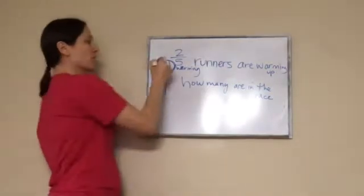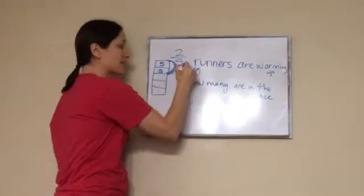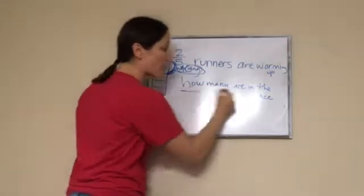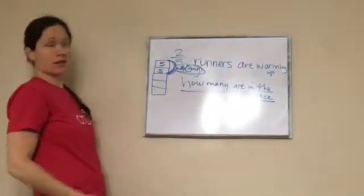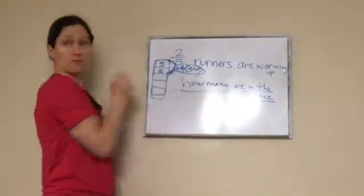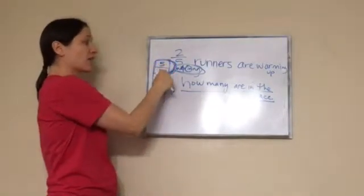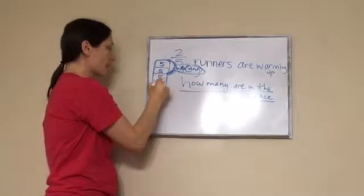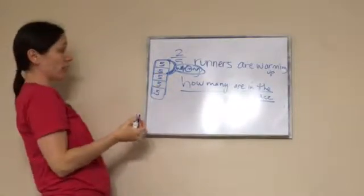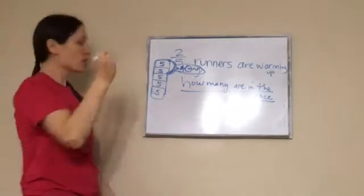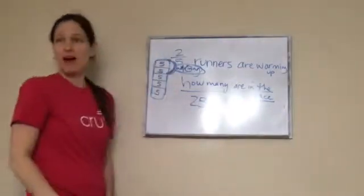Five. So this is five and this is five, which means that there are 10 warming up. But they want to know how many are in the race. That includes all of them, not just the ones that are warming up. Well, if this one's five, then that means all of them are five. So how many are in the total? Five, 10, 15, 20, 25. So your answer would be 25 are in the race.